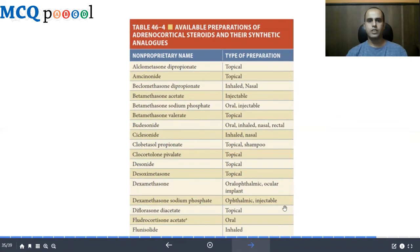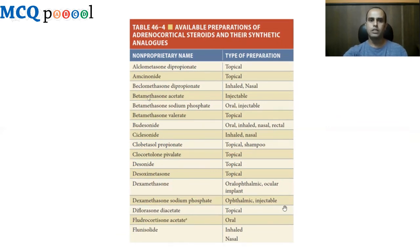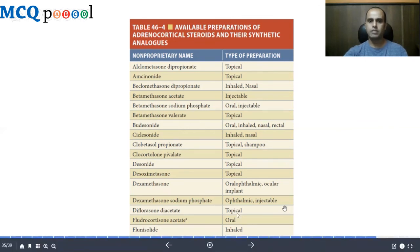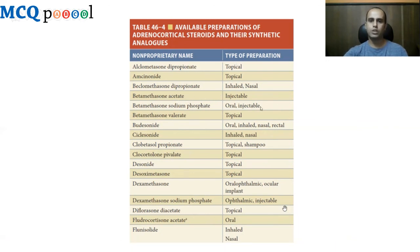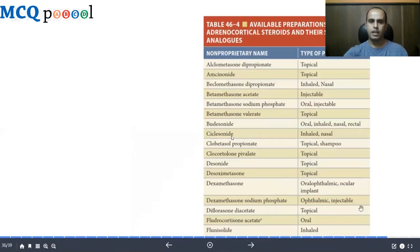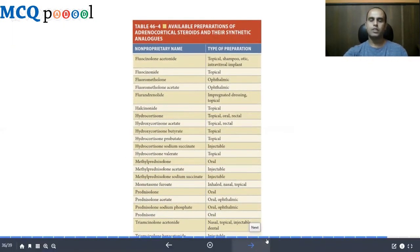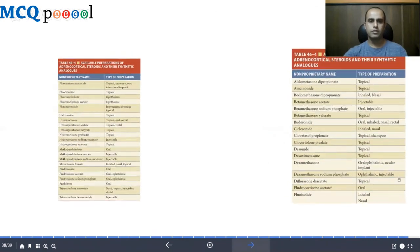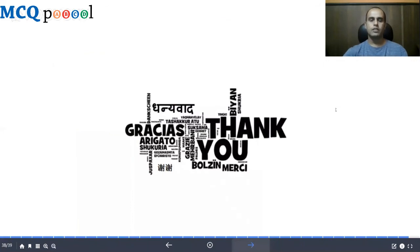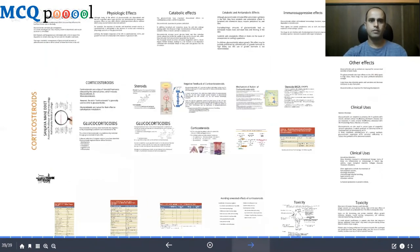Various corticosteroids include betamethasone, budesonide, ciclesonide, clobetasol, dexamethasone, and fluticasone, among others. While you don't need to memorize all drug names, it is useful to know which are topical and which are nasal preparations, for example. Individual drugs and their specific uses will be covered in the next lecture. Thank you — if you have any queries, let me know in the comment section below.